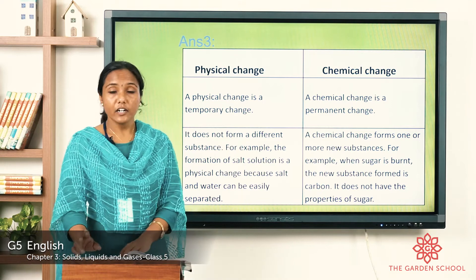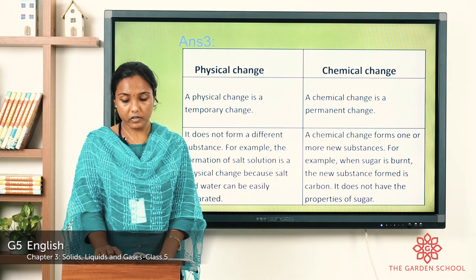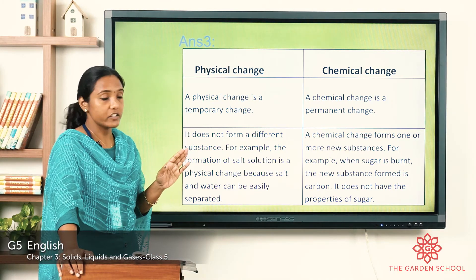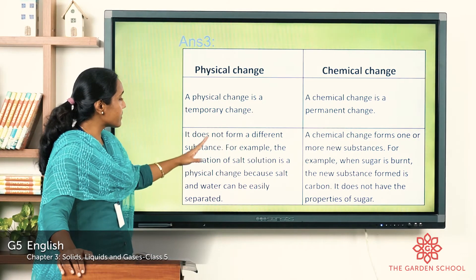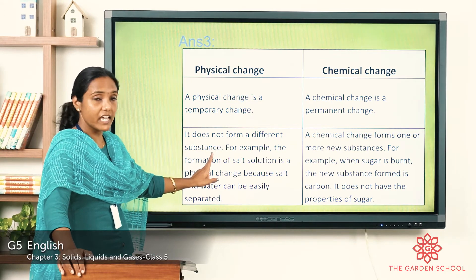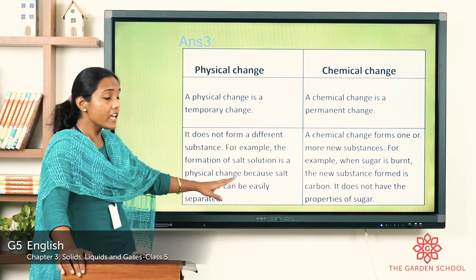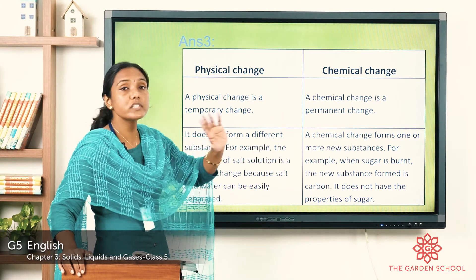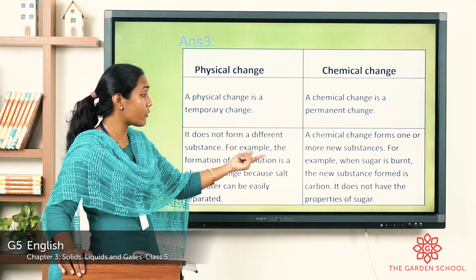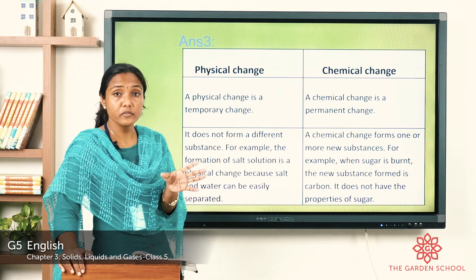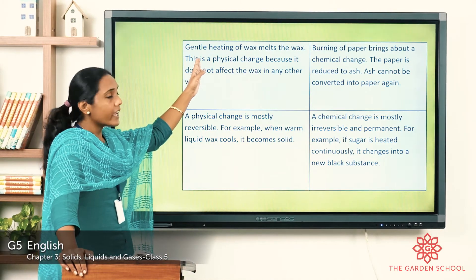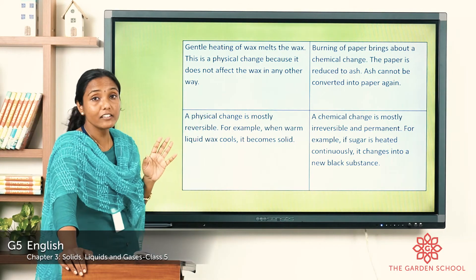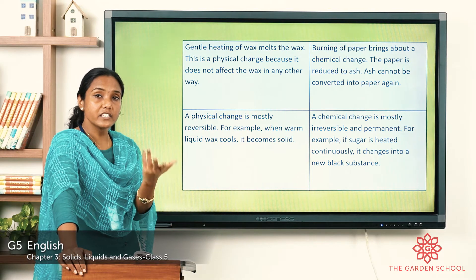Now let's see the third question: distinguish between physical and chemical changes. A physical change is a temporary change but a chemical change is a permanent change. In a physical change, no different substance is formed — for example, the formation of salt solution is a physical change because salt and water can be easily separated. A chemical change forms one or more new substances — for example, when sugar is burned, the new substance formed is carbon, which does not have the properties of sugar. Also, gentle heating of wax melts the wax — a physical change — because it does not affect the wax in any other way; it remains the same whether melted or solid.